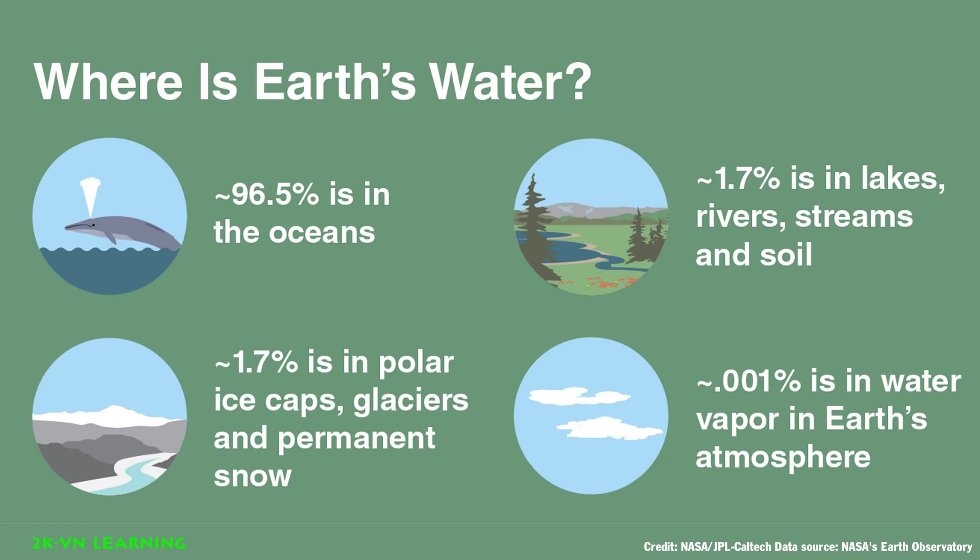Solid ice is found in glaciers, snow, and ice, also in the north and south poles. Water vapor, or gas, is found in Earth's atmosphere. The Earth's atmosphere is very moist because it is filled with water molecules, which is water vapor.